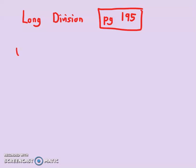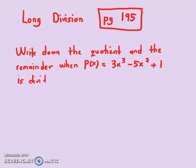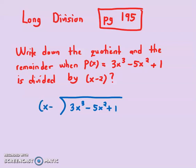It uses a long division approach to find the value of x. I can show you actually, because I have time. The question is something like this: Write down the quotient and the remainder when P(x) = 3x³ - 5x² + 1 is divided by x - 2.